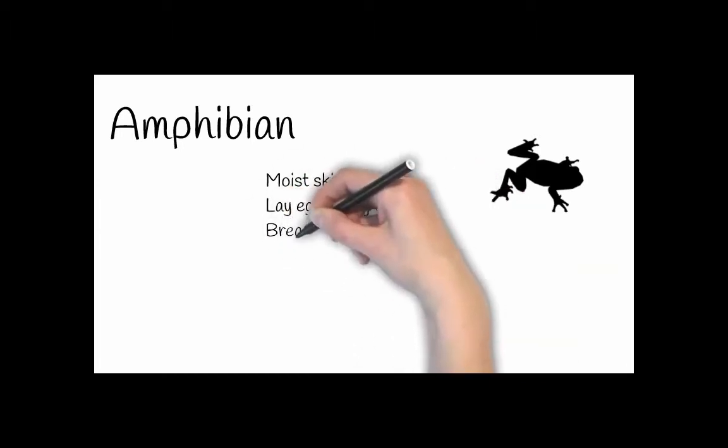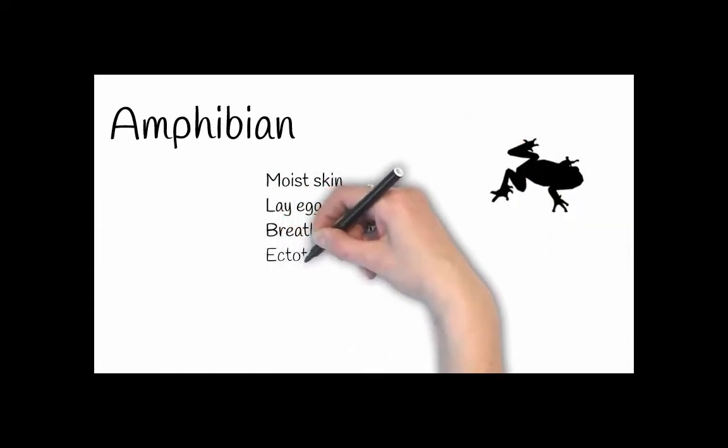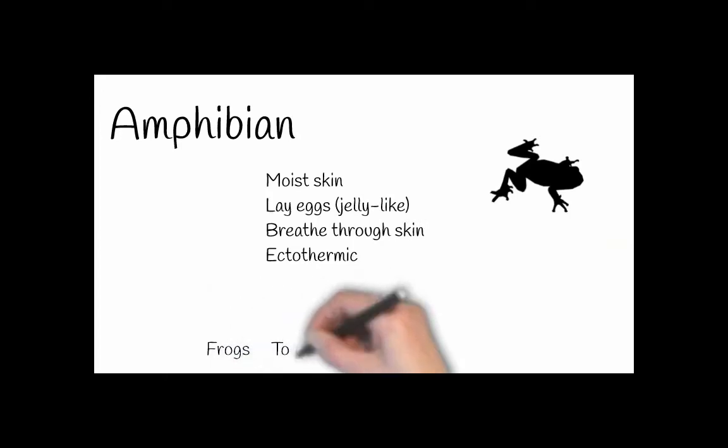Now there are four main groups of amphibians and those are frogs, toads, salamanders, and newts.